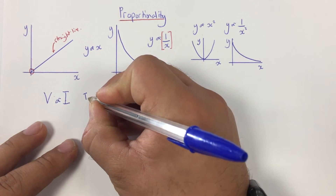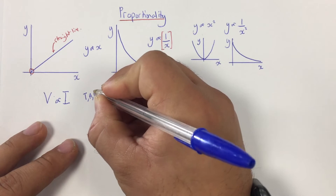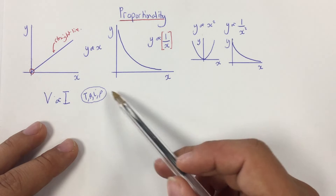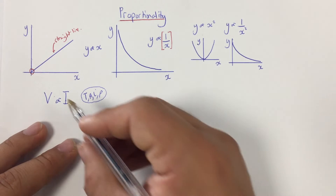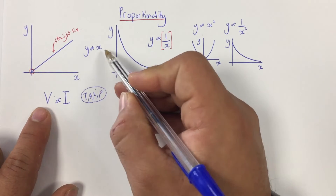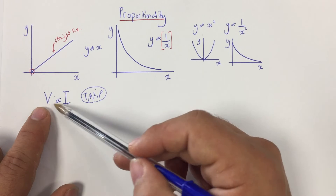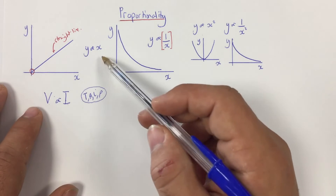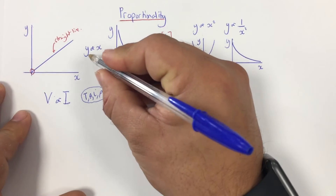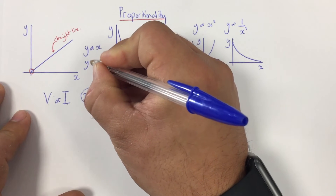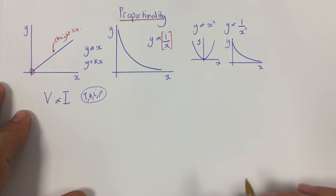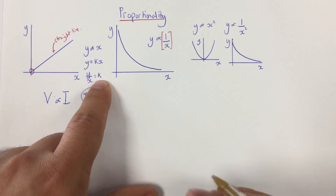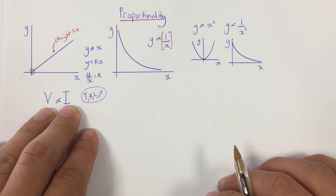The factors we're keeping constant include temperature, the length, cross-sectional area of the wire, and the resistivity of the material. This relationship depends on all those factors being constant. To turn a proportionality into an equation, we add a constant K, so y equals Kx. Rearranging gives y divided by x equals a constant K, which will always be some constant number assuming this relationship holds true.